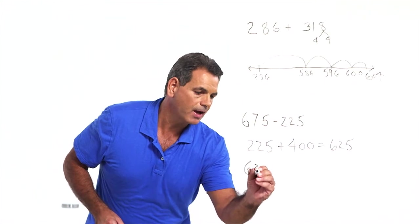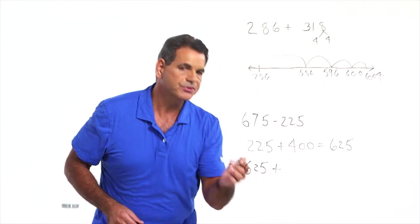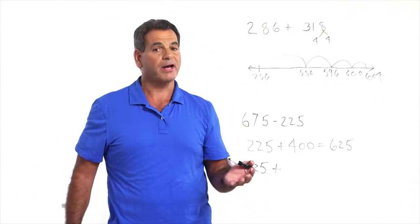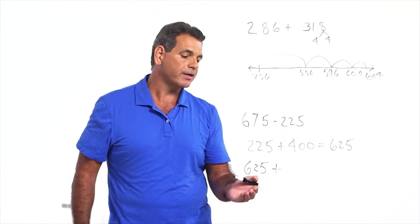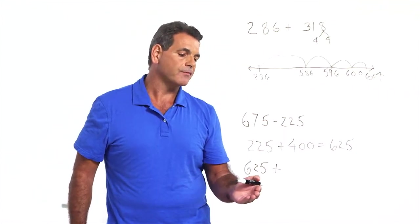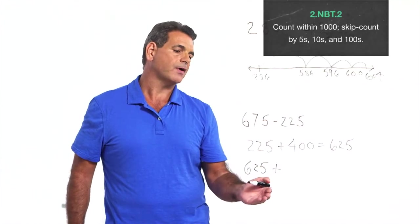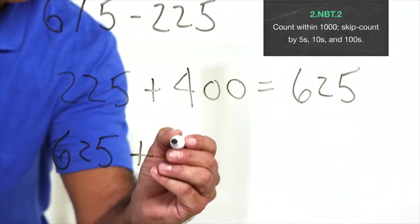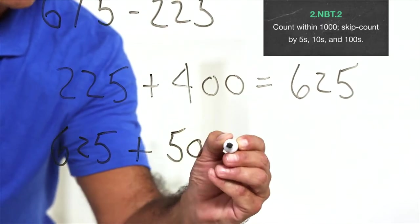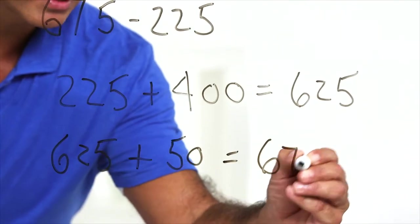225 plus 400 gives us 625. We're at 625. We need to get to 675. Second graders can count by tens. 625, 635, 645, 655, 665, 675. And notice that was five tens, which is 50 equals 675.